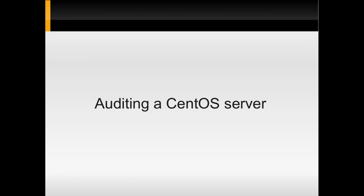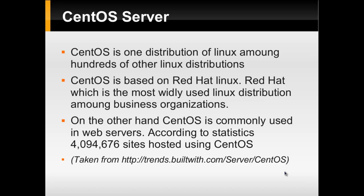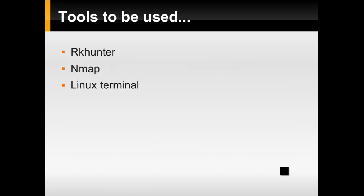Today we are going to show how to audit a CentOS server and detect if there are any fraudulent activities in it. CentOS is one distribution of Linux among hundreds of other Linux distributions, and it is most commonly used as a web server operating system. Today we are going to use RKHunter, nmap, and Linux terminal commands to audit CentOS.